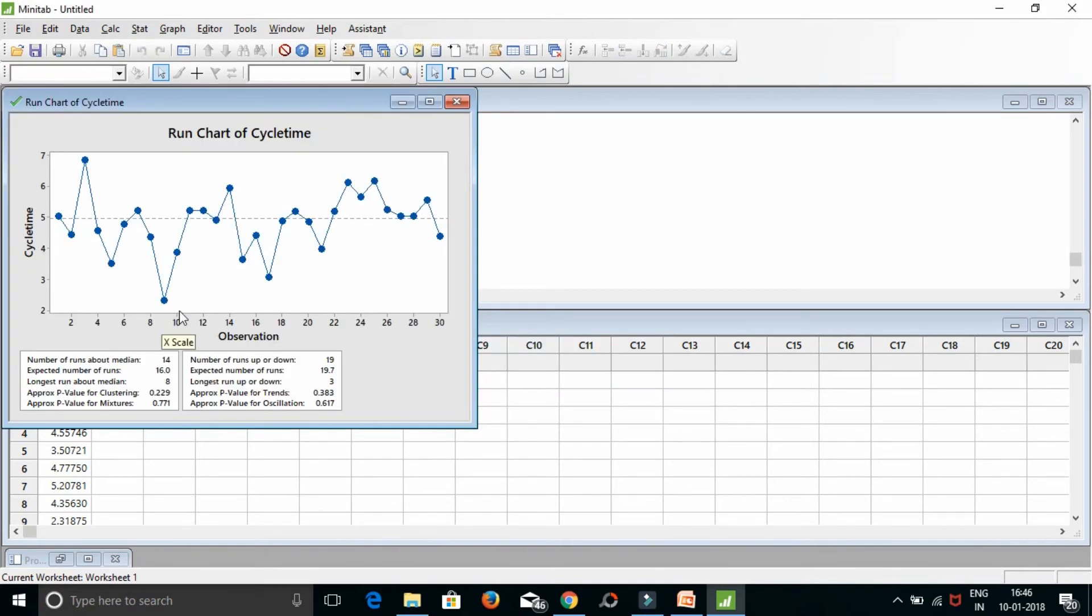So this is the run chart for cycle time. It has clusters, mixtures, trends and oscillations. The p-values are greater than 0.05 in all the four cases. It suggests that the data has no special causes in it and you can go ahead and do data analysis with this data.